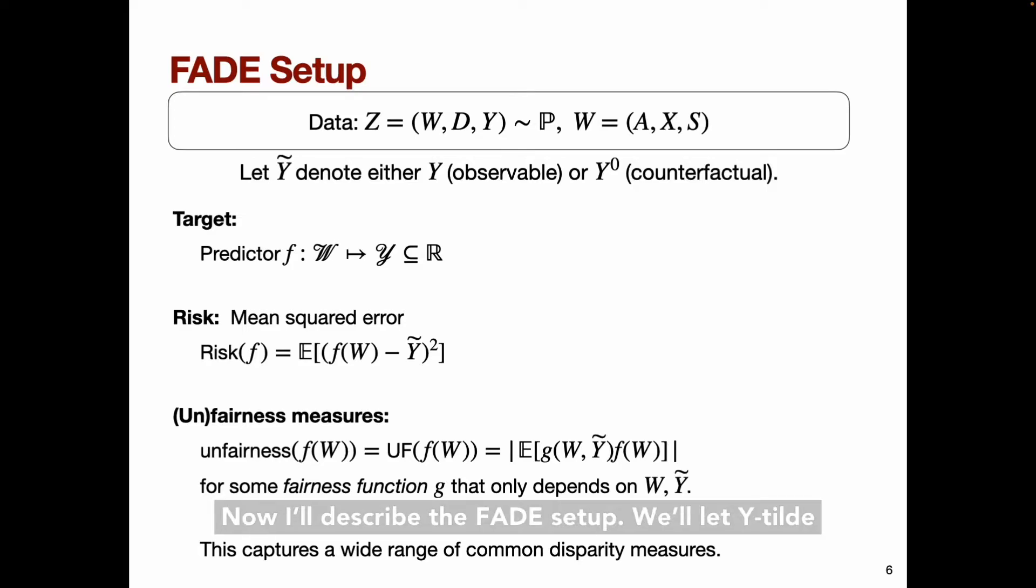Now I'll describe the FADE setup. We'll let Y tilde denote either Y or Y0, since we're interested in being able to handle either observable or counterfactual outcomes. Our target is a predictor F of W, where again, W represents the different features that are available to us, including any previously existing predictors, S, which we want to incorporate into our ensemble.